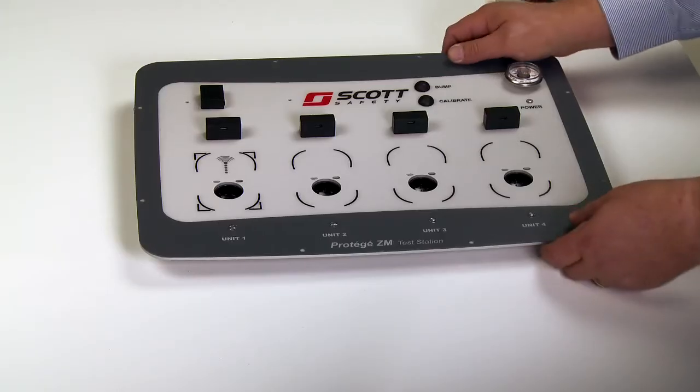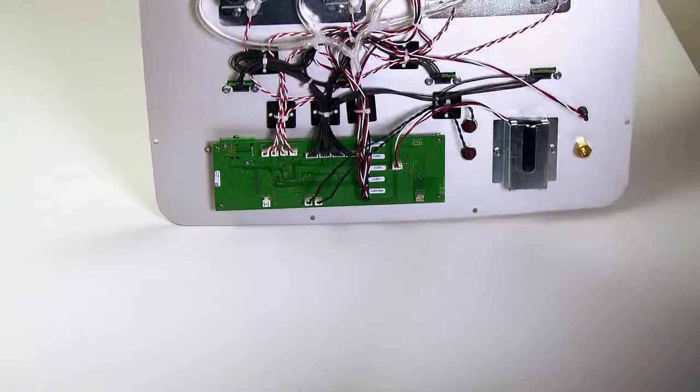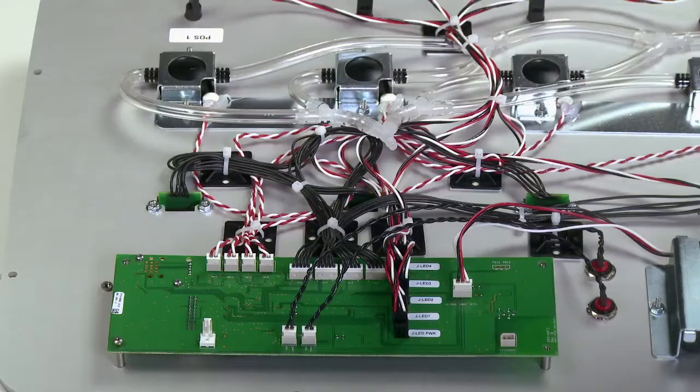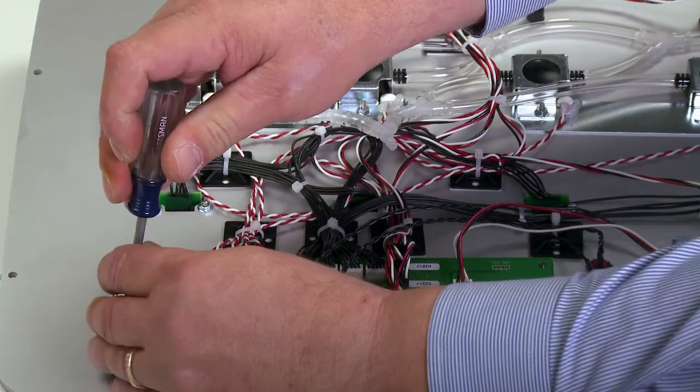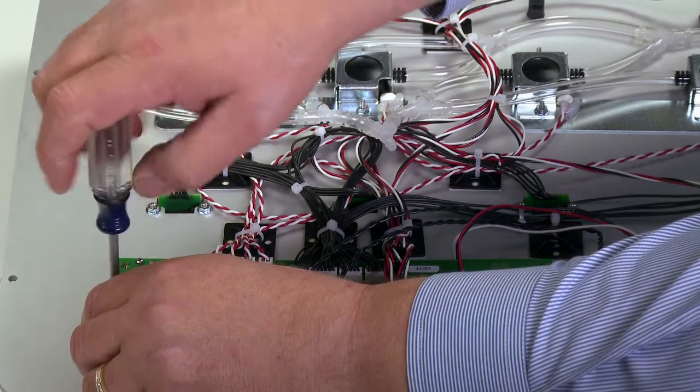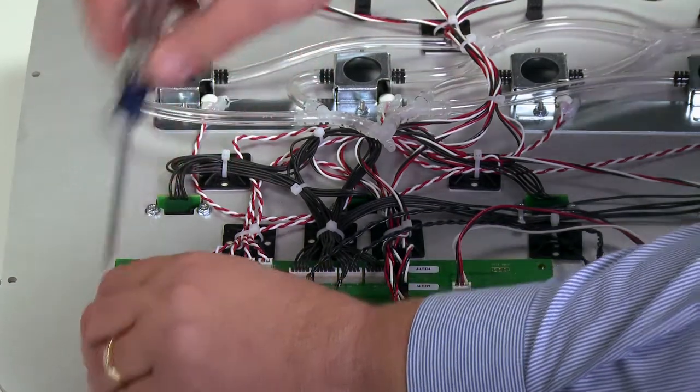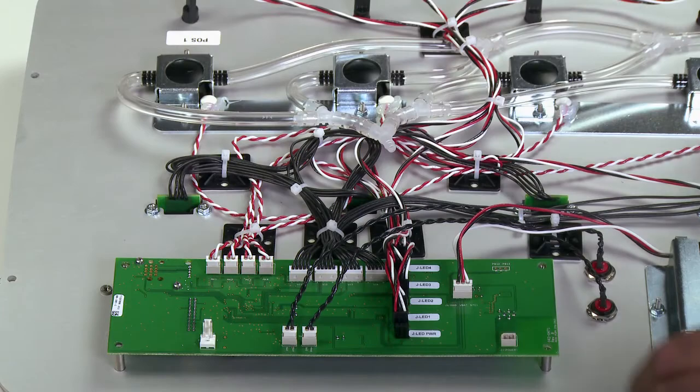Flip the main panel assembly over so the underside is facing you. Now remove the four Phillips head screws that hold the main printed circuit board assembly in place. Remove the screws and set aside.